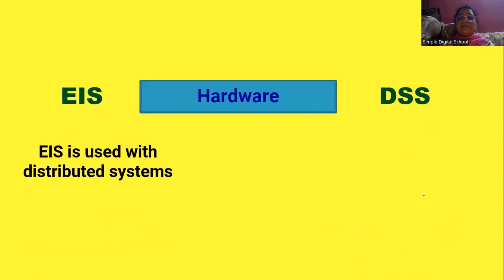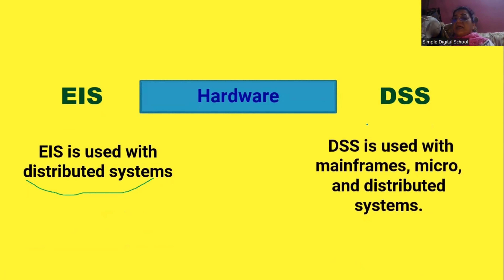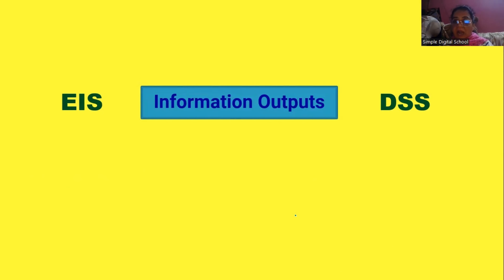EIS is used with distributed systems, whereas DSS is used with mainframes, micro, and distributed systems.